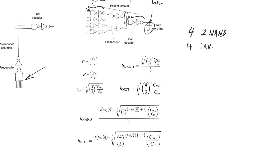The logical effort of a two-input NAND gate is 4/3; the logical effort of an inverter is unity. Therefore, the total chain logical effort is (4/3)^4. The total electrical effort is the word line capacitance divided by the input capacitance of the first NAND gate. This gives us the total effort F = G × H, and the optimal stage effort is the eighth root of the total chain effort, since we have eight stages — four NAND gates and four inverters.